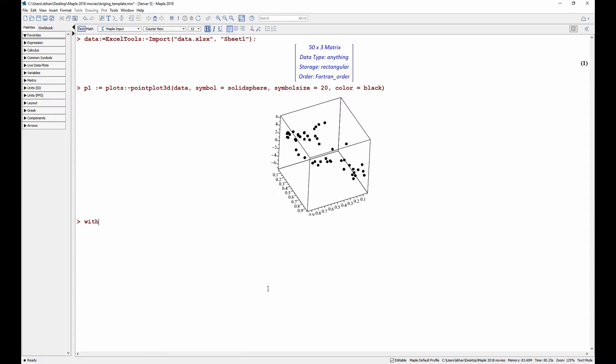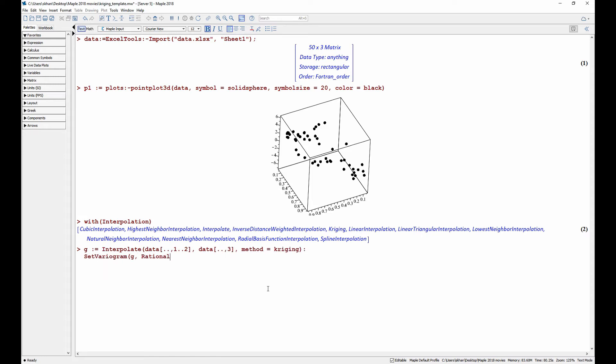The new package offers several algorithms for interpolating 2D and 3D data sets. We create an interpolating function using Kriging interpolation and set a rational quadratic variogram.